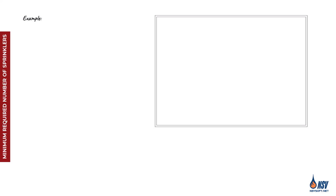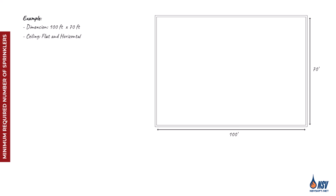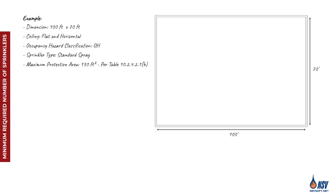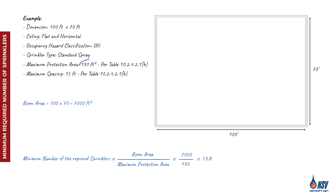Let's walk through an example to see how we calculate the minimum number of sprinklers required. We consider a room measuring 100 by 70 feet, featuring a flat horizontal ceiling in an ordinary hazard occupancy classification. The selected sprinkler type is standard spray. According to Table 10-2421B, the maximum coverage area per sprinkler is 130 square feet with a maximum spacing of 15 feet. The room's total area is 7,000 square feet. Dividing that by 130 gives approximately 53.8.